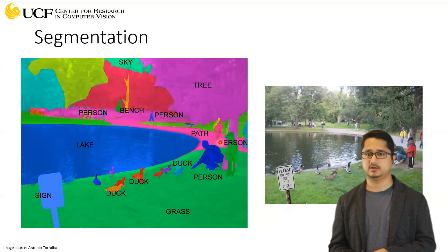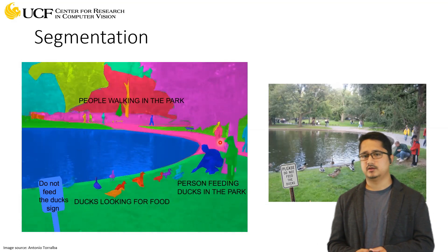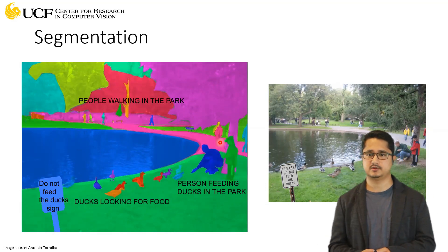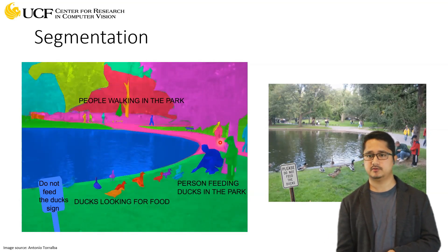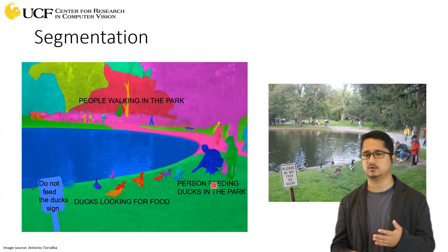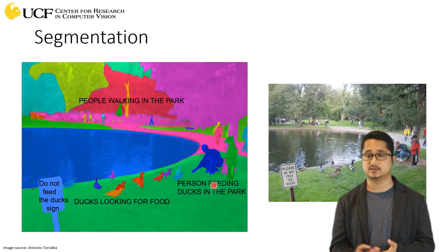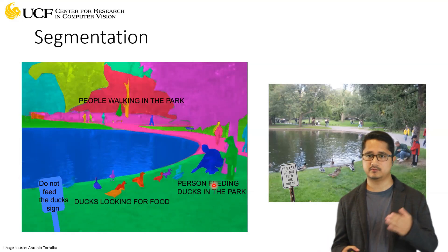With segmentation, you can group pixels together and say which entity or class a set of pixels belongs to. You can also go one step further and try to define what is happening in the scene — for example, knowing all these pixels belong to a person, you can also describe what that individual is actually doing, what kind of activity they're performing. This is also related to image captioning, where you generate a caption for a given image that describes whatever you see in it — again more complex than just semantic segmentation.